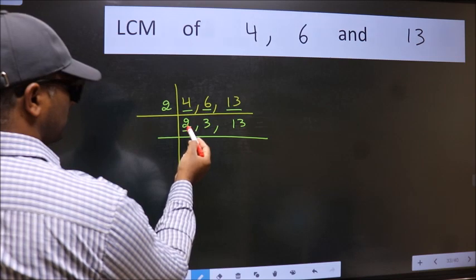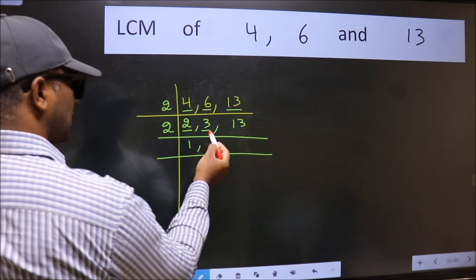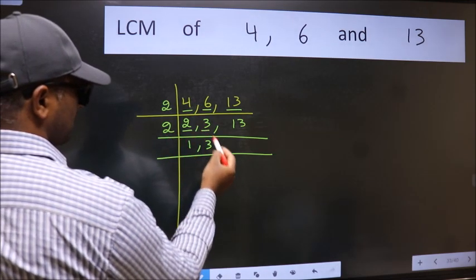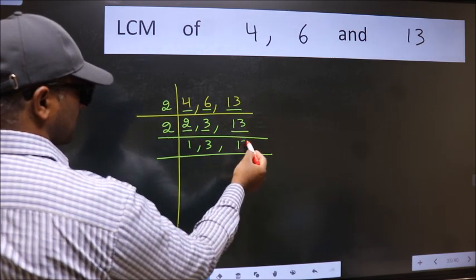Now here we have 2, 2 is a prime number. So 2, 1 is 2. The other number 3, not divisible by 2. So we write it down as it is. The other number 13, not divisible by 2. So we write it down as it is.